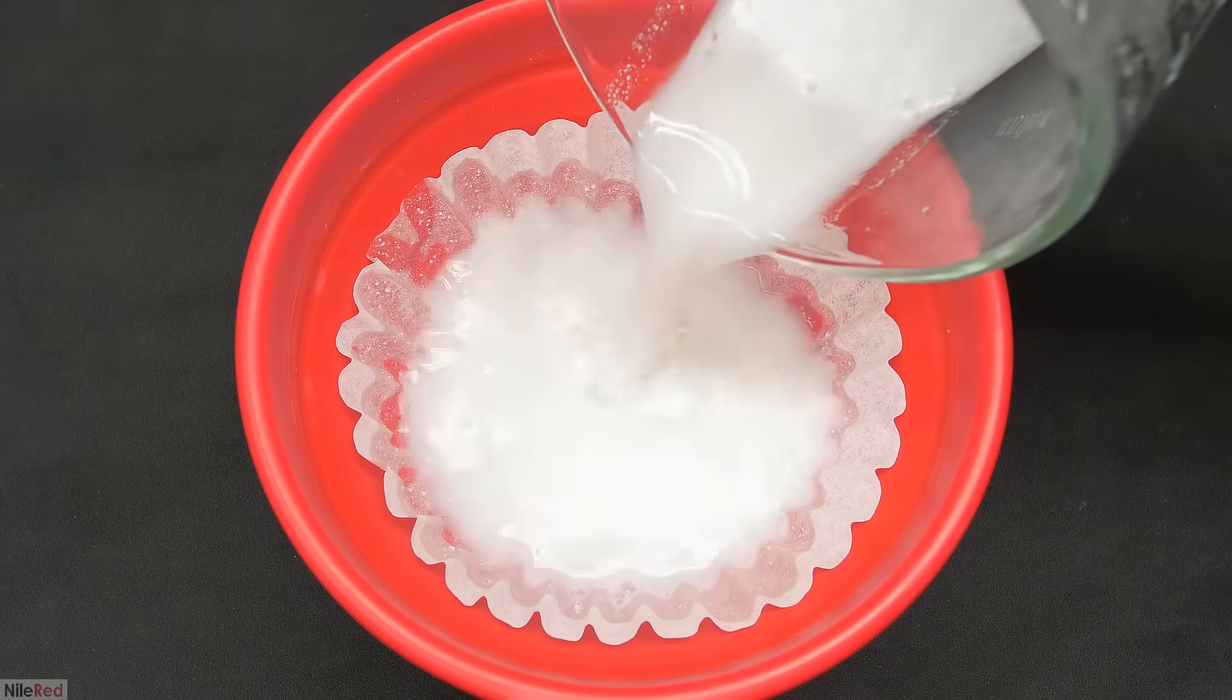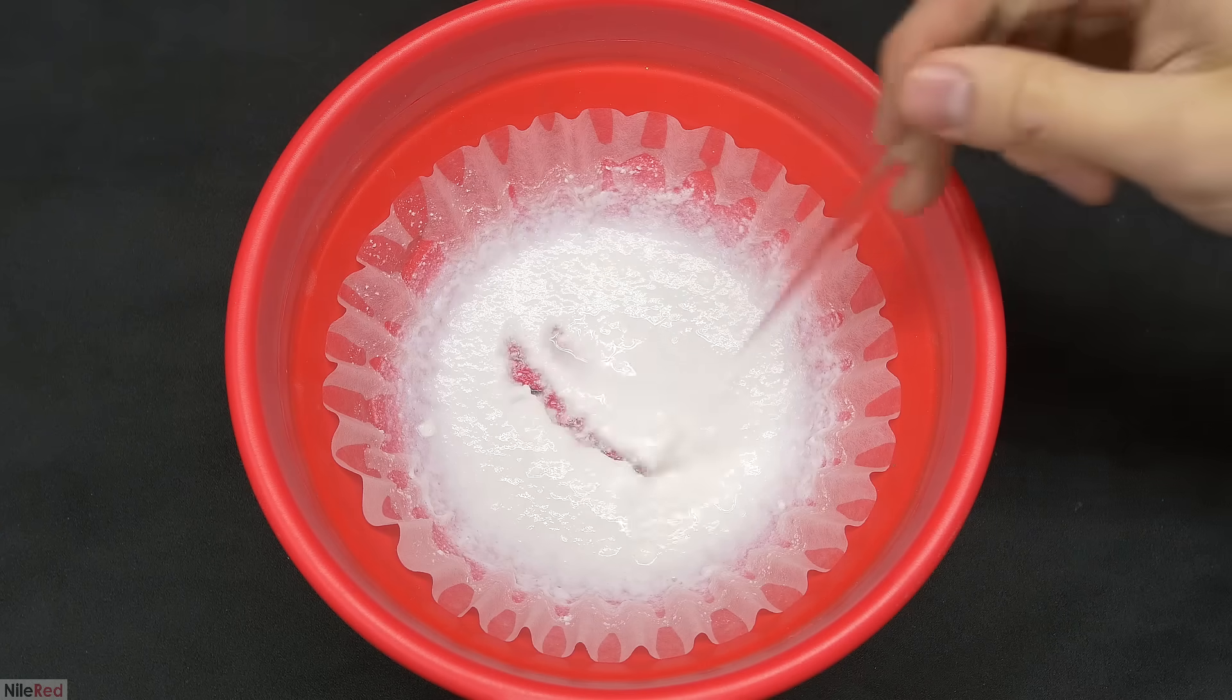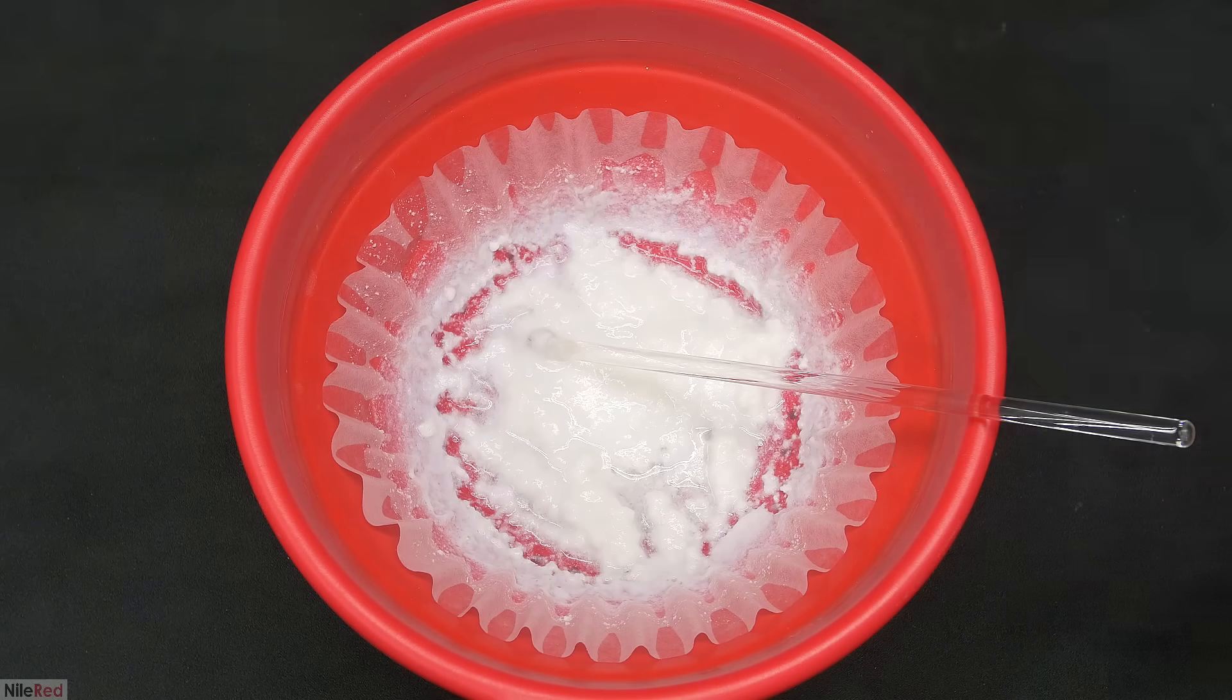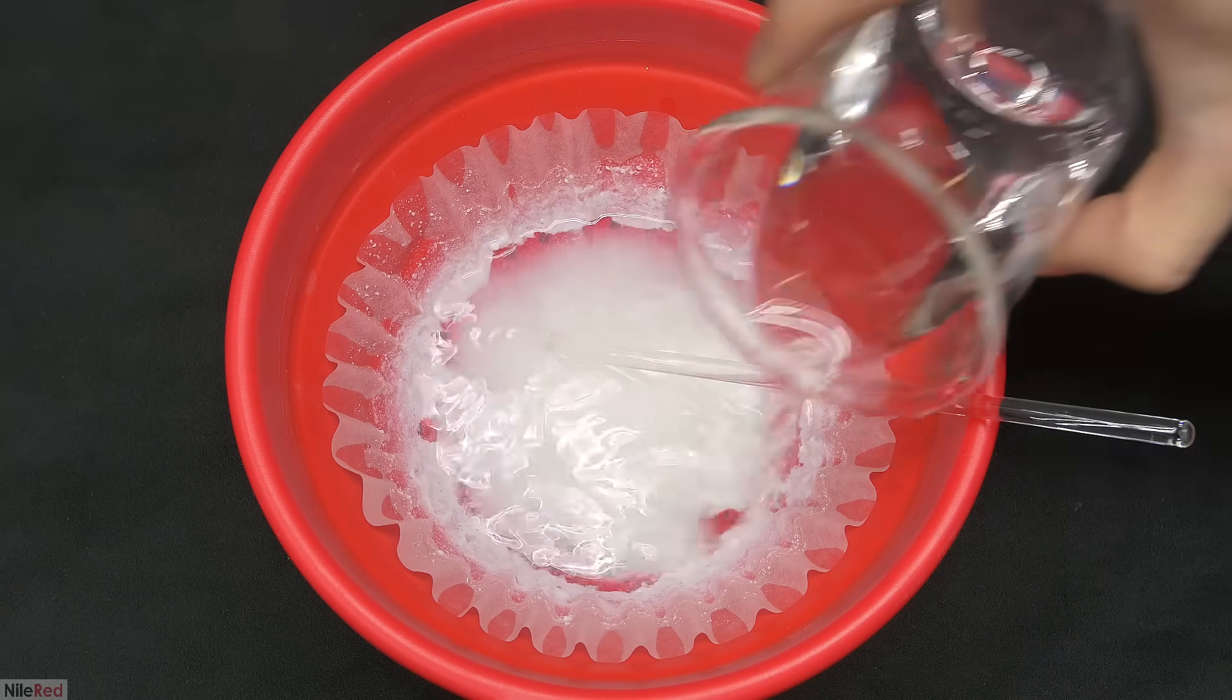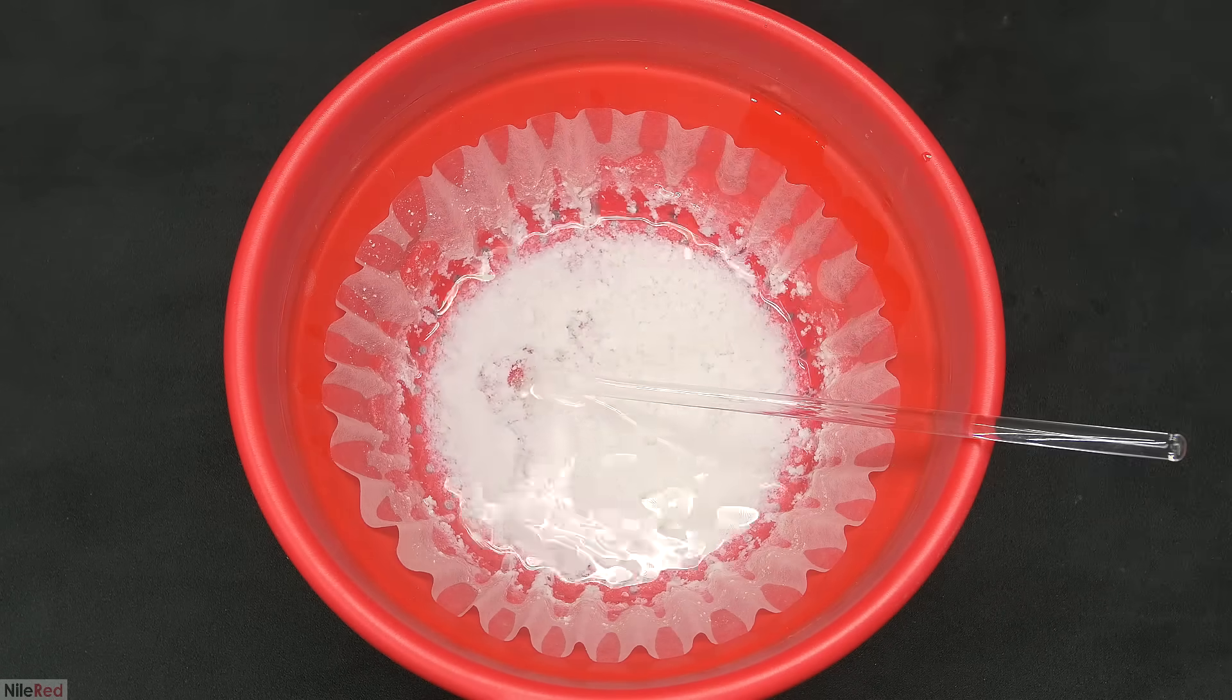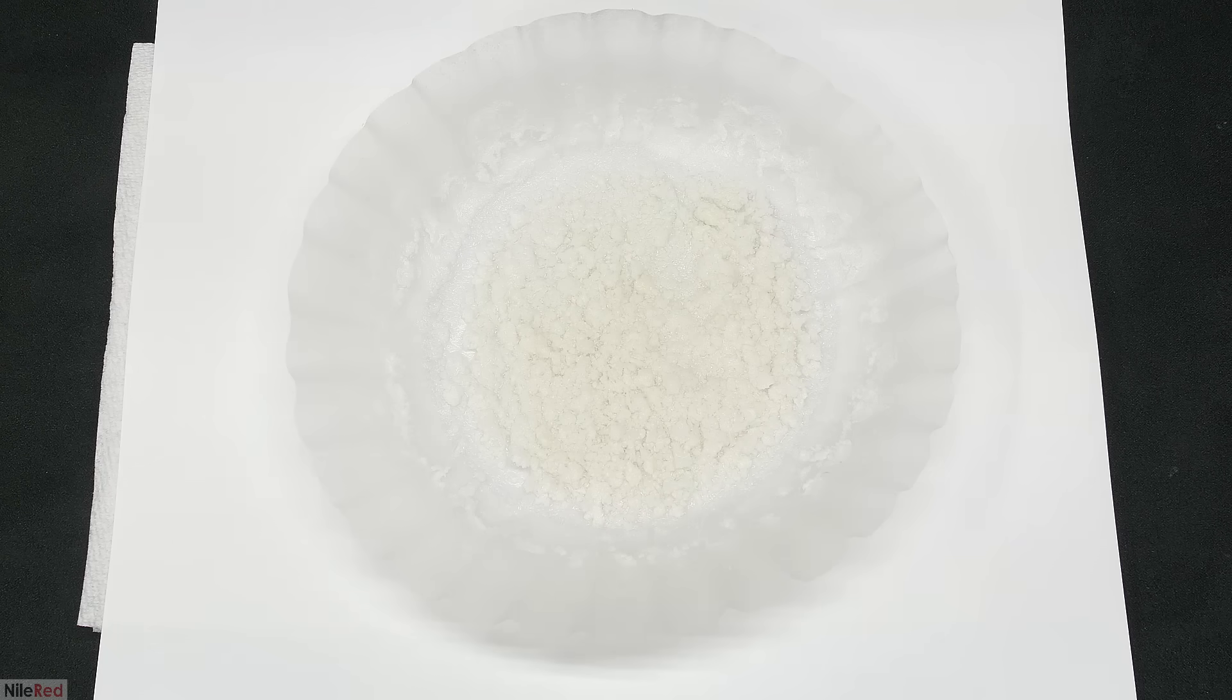Everything was transferred to the filter, and the blender was washed with a small amount of distilled water. Once all the water had passed through, I was left with this goopy stuff. To further wash the casein, and to dry it up, I added some 99% isopropyl alcohol. Once everything had passed through, I washed it again with the alcohol. Then, once all of this alcohol had filtered through, the casein was transferred somewhere to dry.